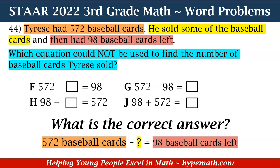Now let's look at G: 572 minus 98 equals a square. Can we use that equation to solve? Yes, we could use this equation. Instead of subtracting the unknown from 572, we subtract 98, which will give us how many cards he sold. So G cannot be our correct answer.